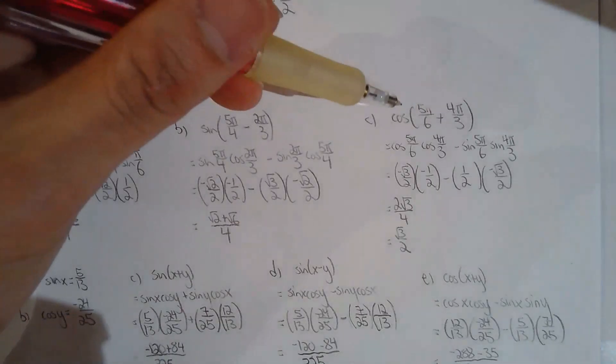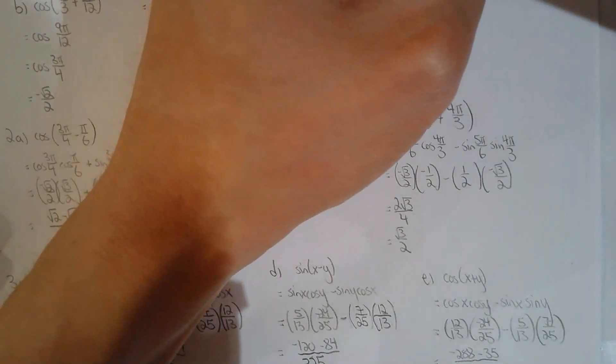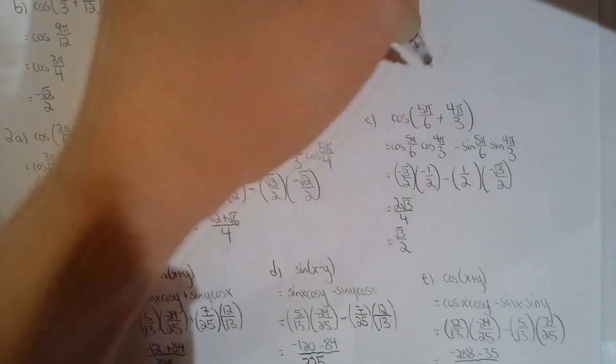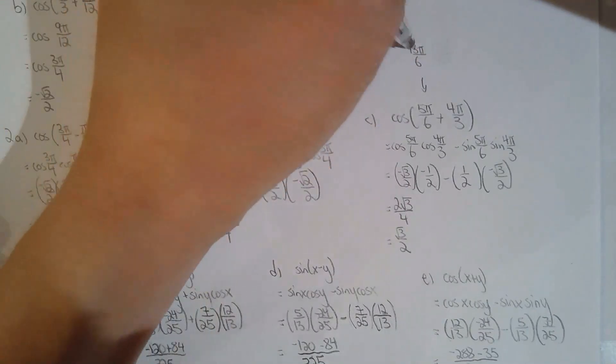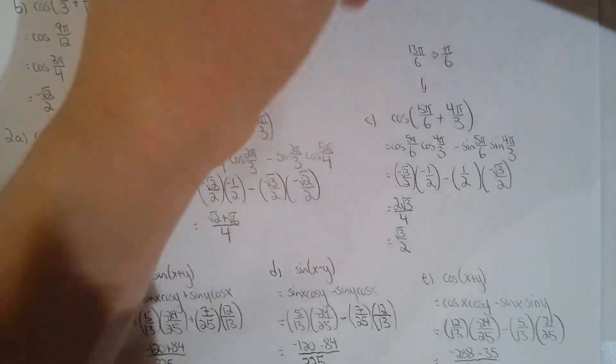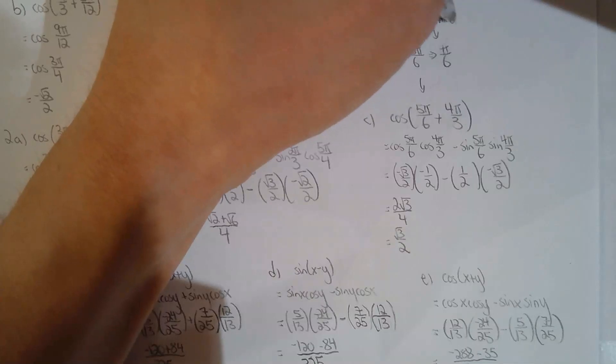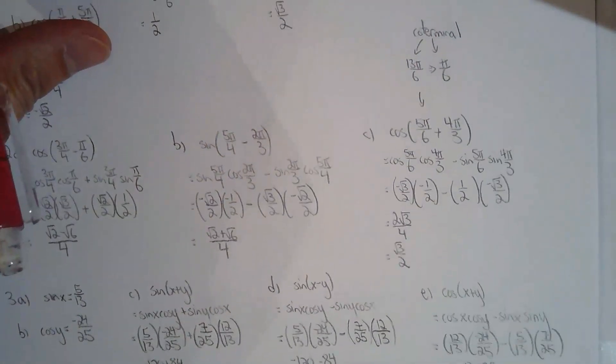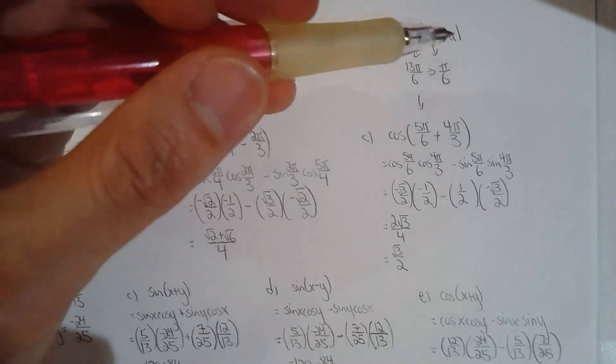So it's pretty silly to use the compound angle formula for 2c because 5 pi over 6 plus 4 pi over 3, if you do the math, is 13 pi over 6. Now 13 pi over 6 is coterminal to pi over 6. These two are coterminal, which means their terminal arms are in the exact same location.